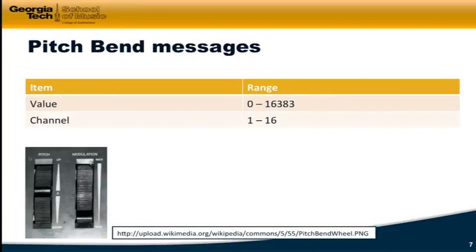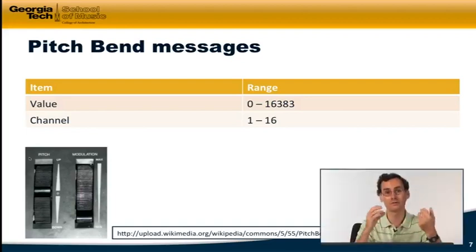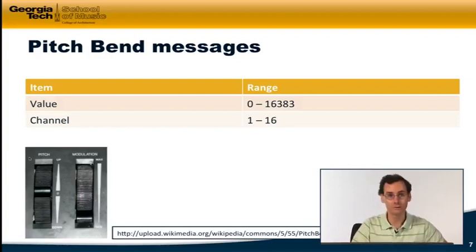So pitch bend actually gets its own MIDI message. It's not a control change number. And because of that, it's actually able to use more bits to encode the pitch bend bias. It goes from 0 to 16,000 or so, rather than 0 to 127. And then of course we tell it what channel it's going to be on. So again, let me just show this to you.